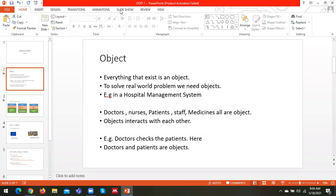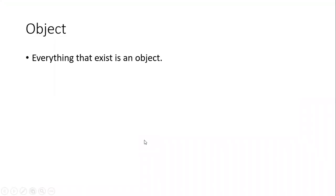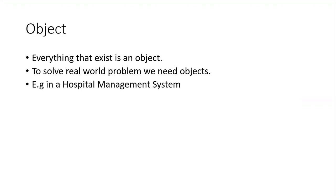So what are objects and why do we use them? Everything that exists in this world is an object. To solve real-world problems, there are multiple objects that interact with each other. For instance, consider a hospital management system — there could be a lot of objects interacting with each other.